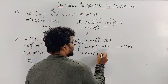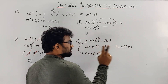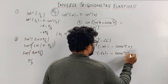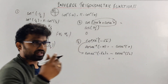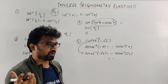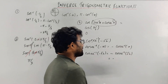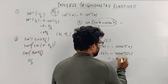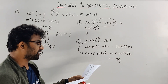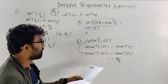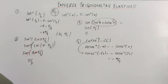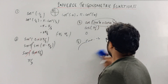So cosec⁻¹(−√2) = −cosec⁻¹(√2). Now, cosec = 1/sin, so we need sin(θ) = 1/√2, which gives θ = π/4 (45 degrees). So the answer is −π/4. Simple question. There are also questions like: write the values of x for which certain conditions hold.